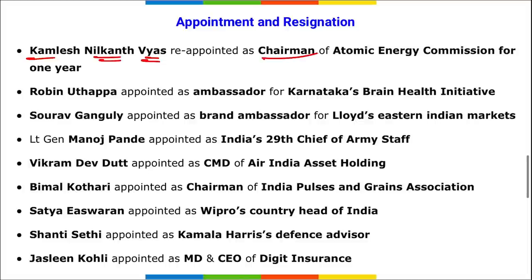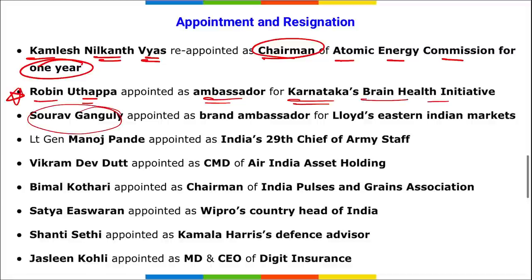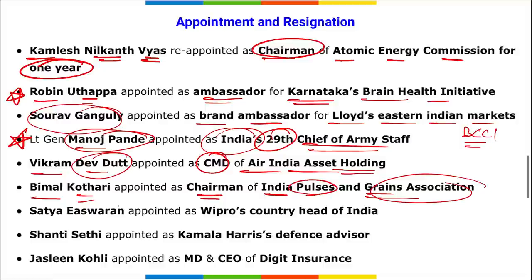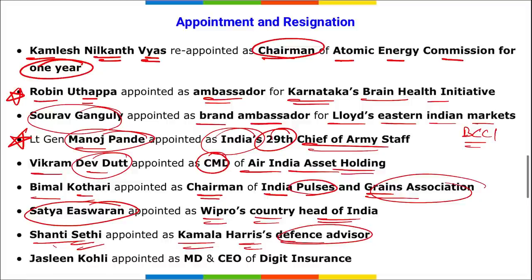Kamlesh Nilkant Vyas was reappointed as Chairman of the Atomic Energy Commission for one year. Robin Uthappa was appointed as brand ambassador for Karnataka's Brain Health Initiative. Sourav Ganguly, also known as Dada, the former Indian cricketer and BCCI President, was appointed as brand ambassador for Lord's Eastern Indian Market. Lieutenant General Manoj Pandya was appointed as India's 29th Chief of Army Staff. Vikram Devdutt was appointed as Chairman and MD of Air India Asset Holding. Jasleen Kohli was appointed as MD and CEO of Digit Insurance. Shanti Sethi was appointed as Kamala Harris' defence advisor.